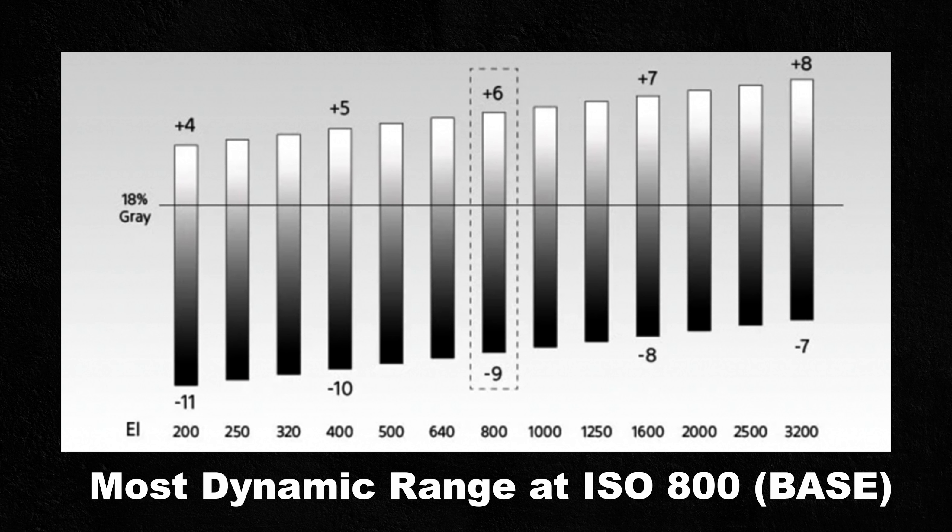At base ISO your camera will also have the most dynamic range. For example, my Canon C70's base ISO is 800, while the Sony FX3 has a dual base ISO of 800 and 12,800. Just look up what your camera's base ISO is — most likely it's either 400 or 800. Always try to keep your ISO at this level. If you need to make any changes to your exposure, change it using the aperture or ND filters. Try not to touch the ISO unless you really need to — going lower loses dynamic range, and going higher introduces unnecessary noise.